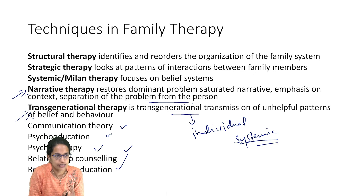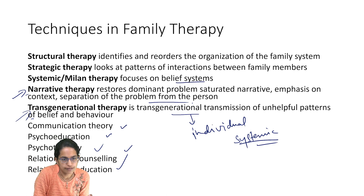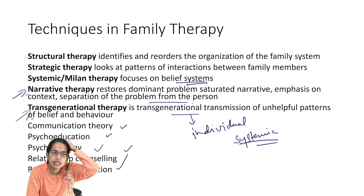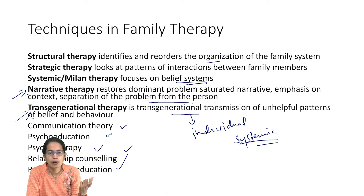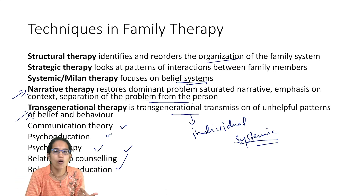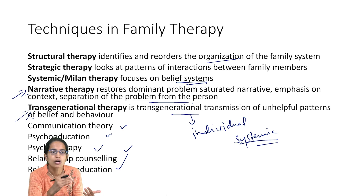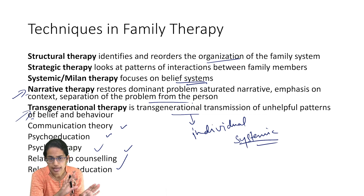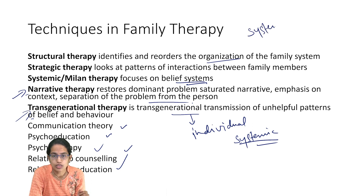Then we have systemic theory, strategic theory, and structural theory. Under structural theory, we focus on the belief system. Under strategic theory, we look at the patterns of interactions between family members. Structural theory talks about the organization of the family system — how we identify and reorder that organization is important. These are some of the techniques under family therapy.